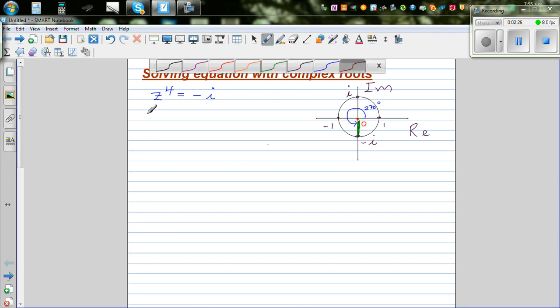So minus i, to write this in polar form, we can say z to the power of 4 is 1 cis 270. You can also call this 1 cis minus 90, but this is by convention from the positive arm. It is 270 if you go anti-clockwise, and if you go clockwise it is minus 90.